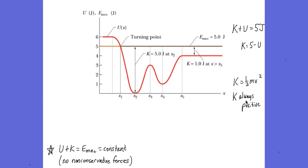Kinetic energy can never be negative. Our equation for kinetic energy is one-half mv squared, so no matter what v is, it squares to be positive. K is always positive. That means the particle cannot be located to the left of position X1, because that would indicate a potential energy greater than 5 joules — more than the total mechanical energy of the system. So the particle is constrained to stay to the right of X1.